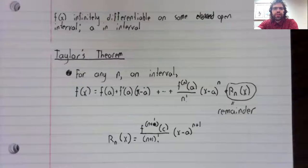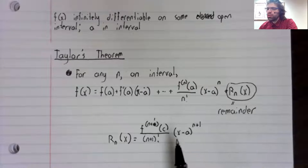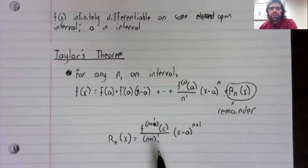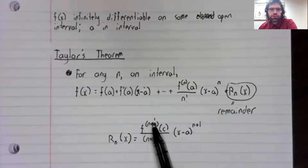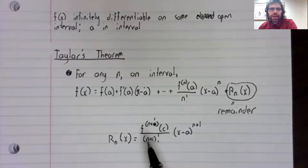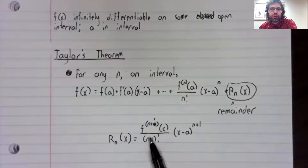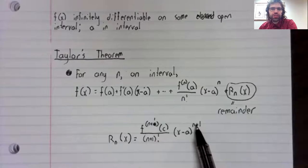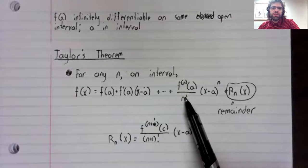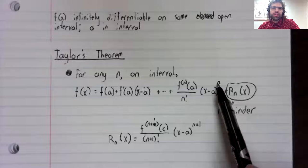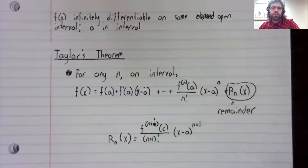And in fact, this remainder looks a lot like a Taylor coefficient. You see the n plus first derivative matching the n plus first factorial matching the n plus first power. However, that's precisely what you see with these Taylor coefficients.